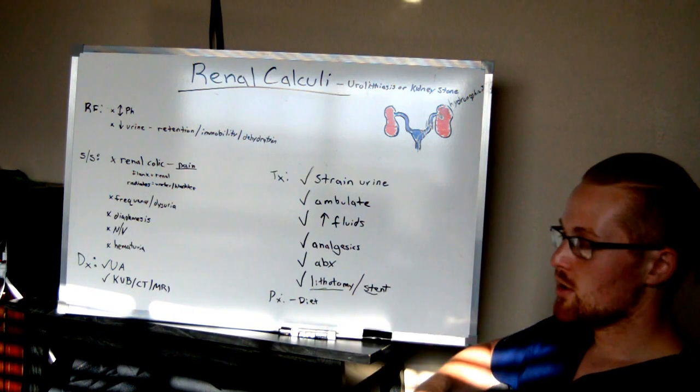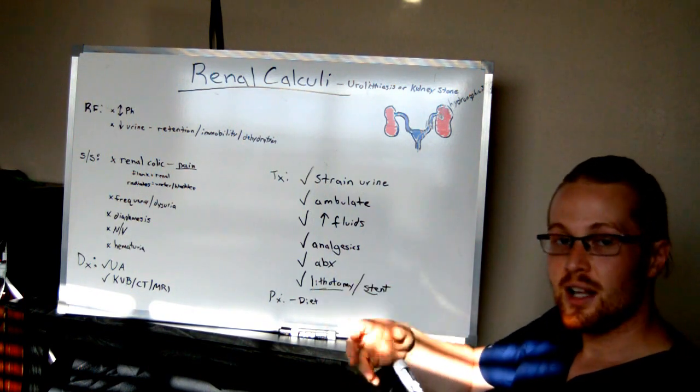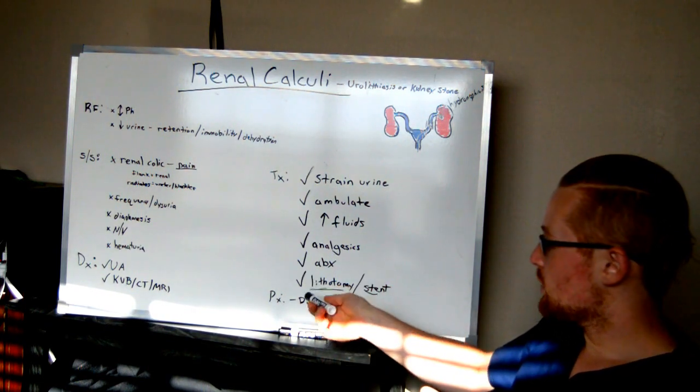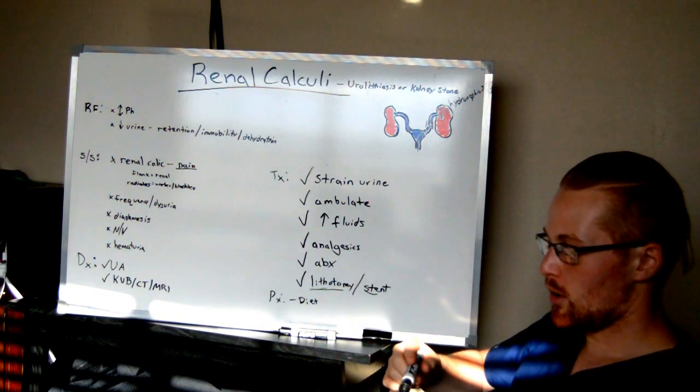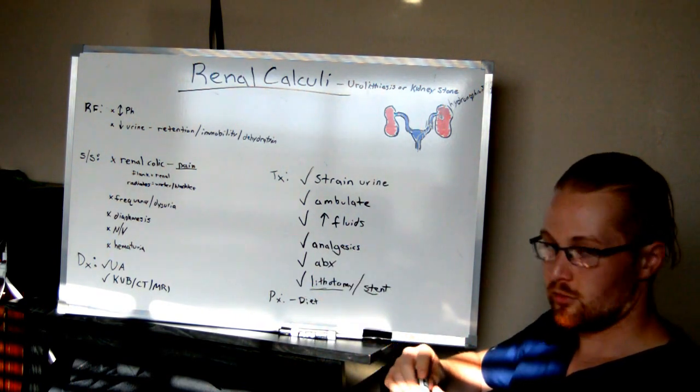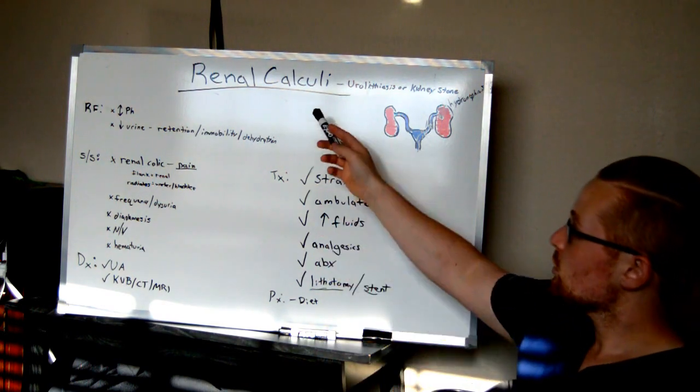So that is treatment. As far as prevention, you want to make sure if they analyze it in the diet, there may be certain foods that they'll want to avoid with uric crystals or calcium phosphate crystals. So this is renal calculi.